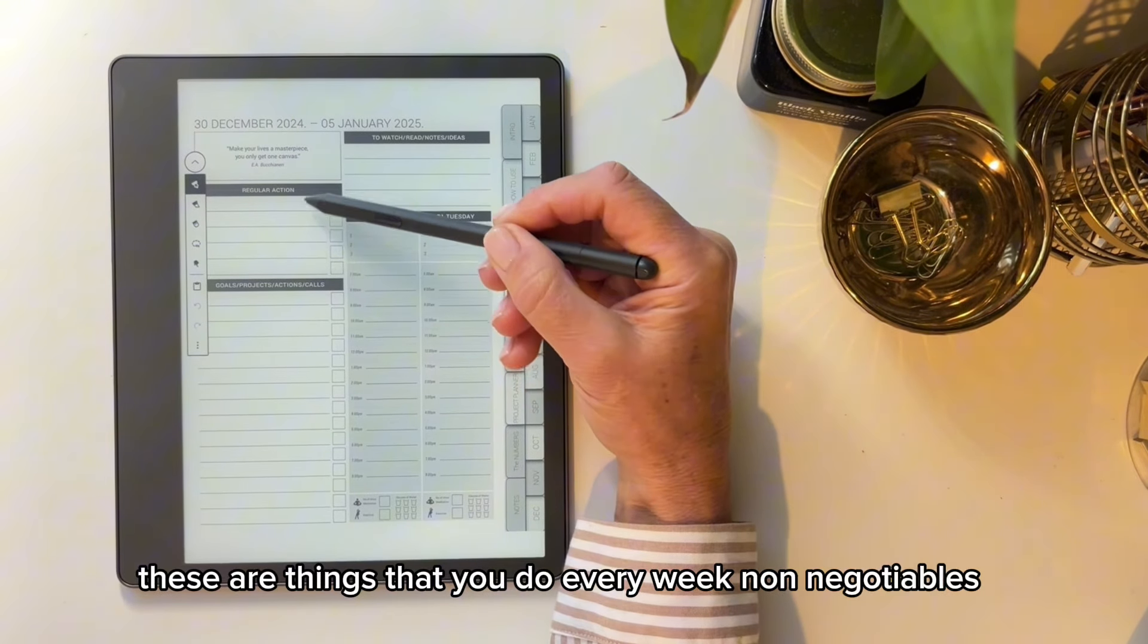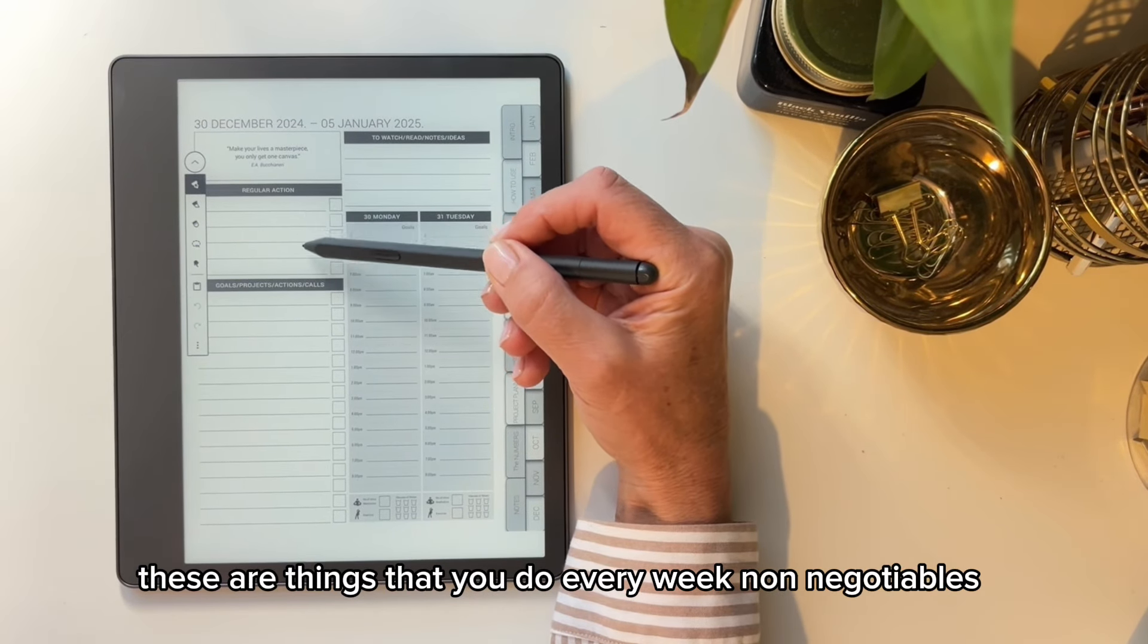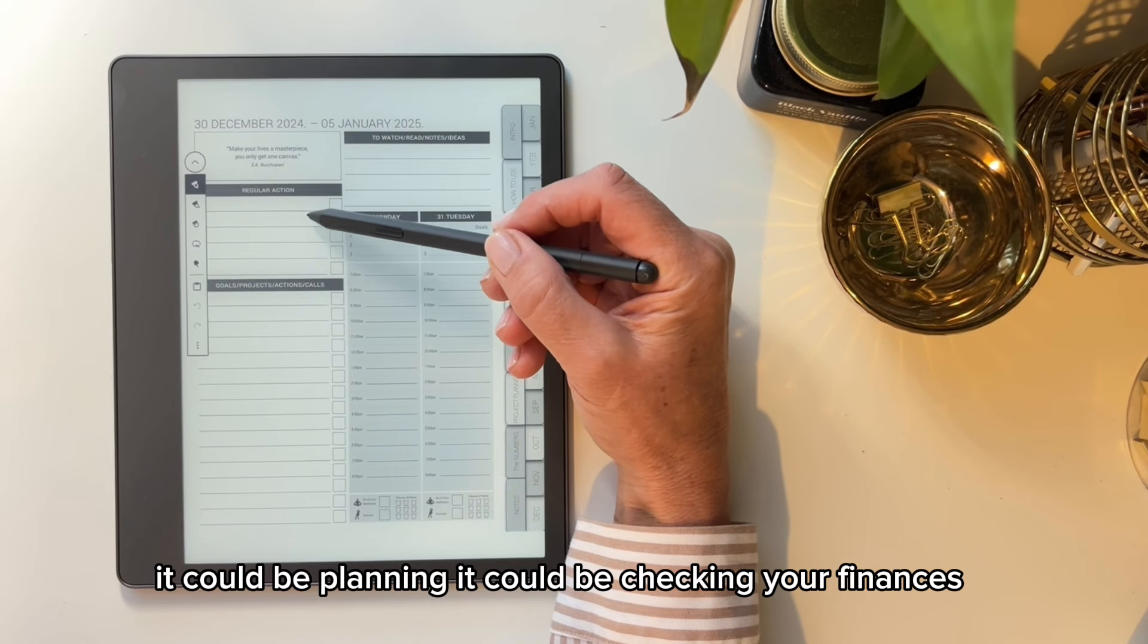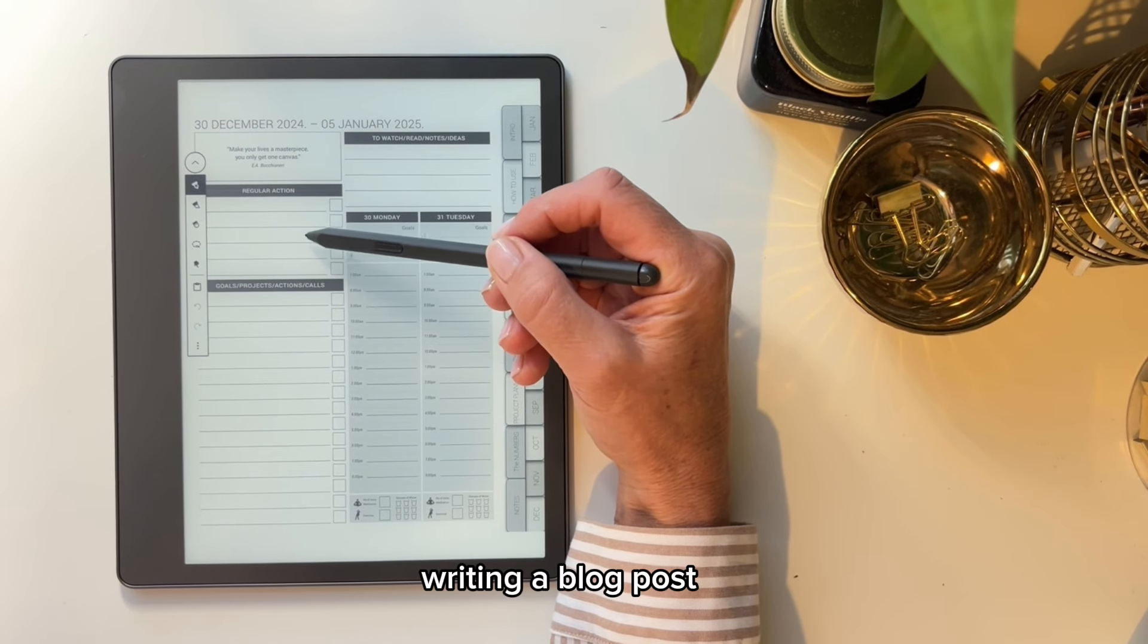Then you've got your regular actions here. These are things that you do every week, non-negotiables. It could be planning, it could be checking your finances, writing a blog post.